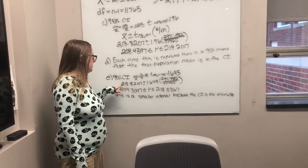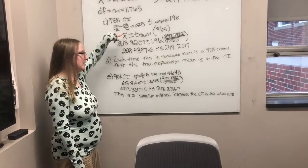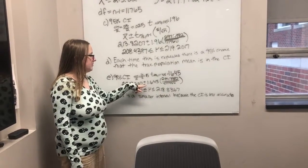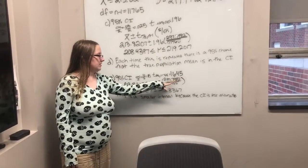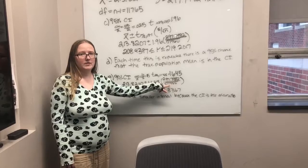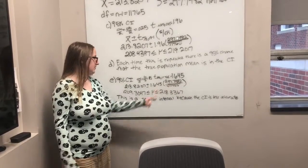And you do the same formula up here. So once again, this is the x-bar plus or minus the t-value times the standard deviation divided by the square root of the number of things that you used.